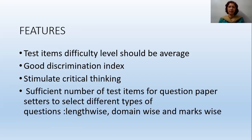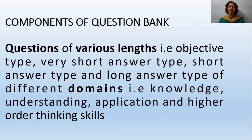There should be a sufficient number of test items so that question papers can select different types of questions. Length-wise — short answer type, long answer type; domain-wise — knowledge, understanding, application, and all objective domains; and marks-wise — one marker, two marker, three marker, five marker — meaning every variety should have a sufficient number of test items in the question bank.